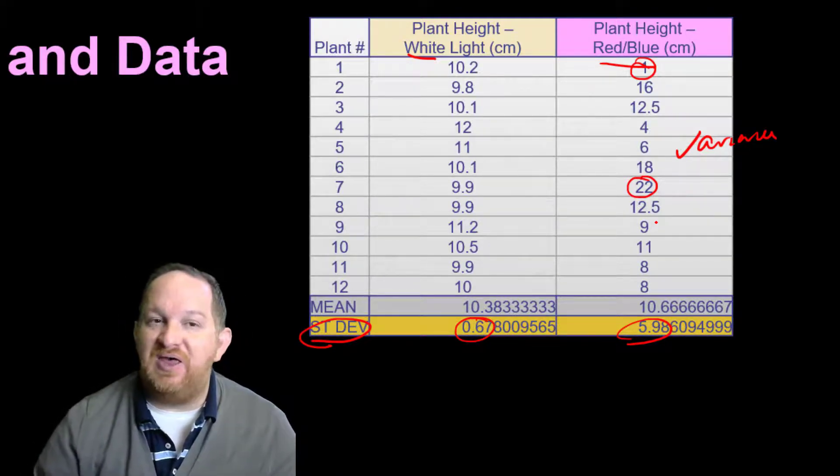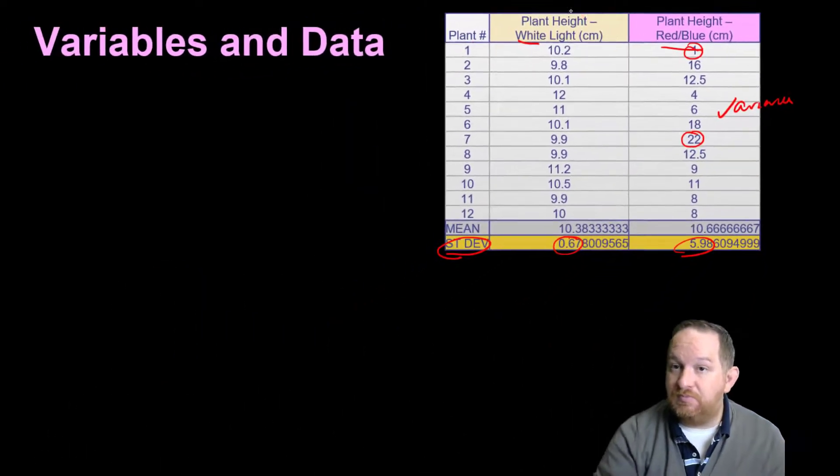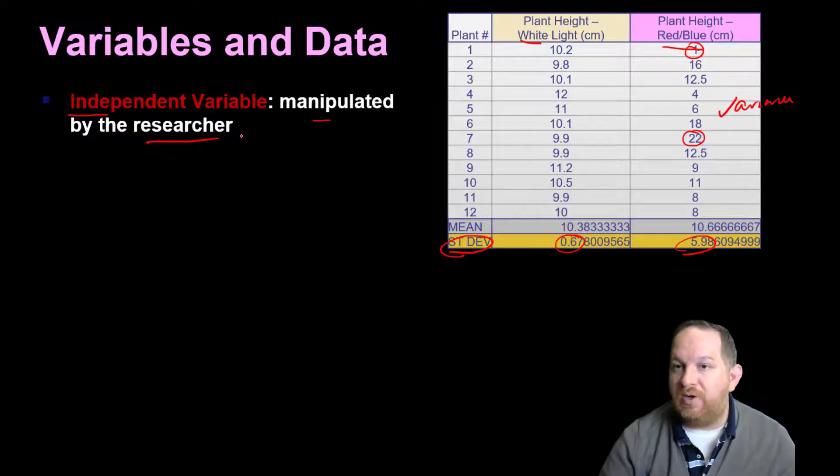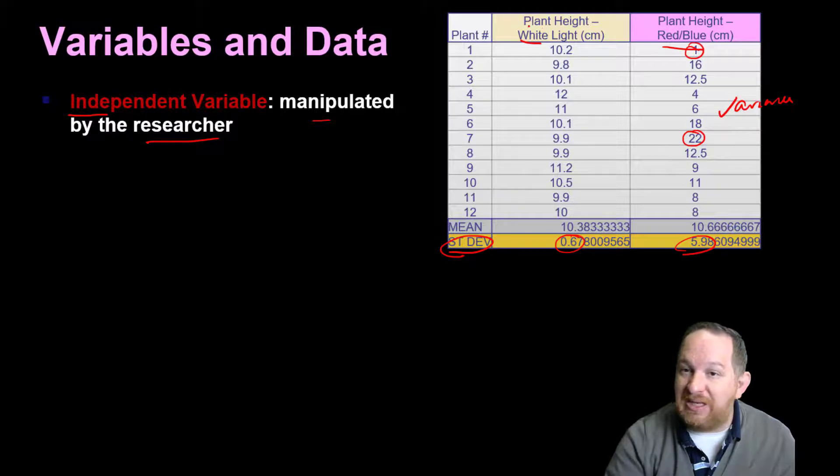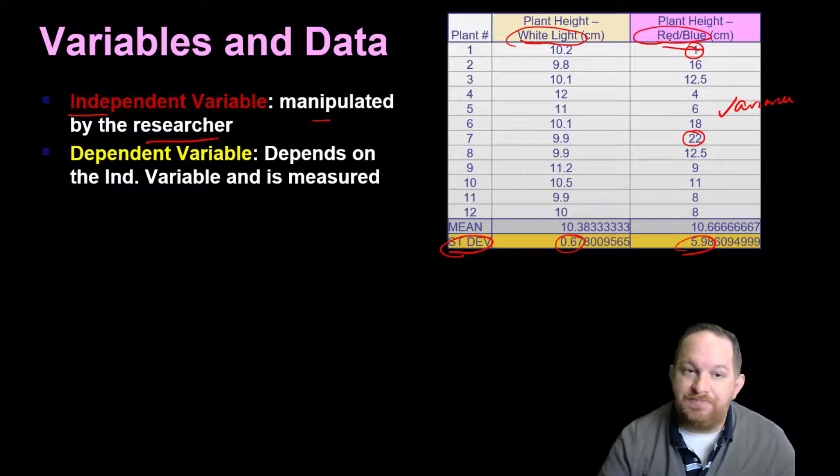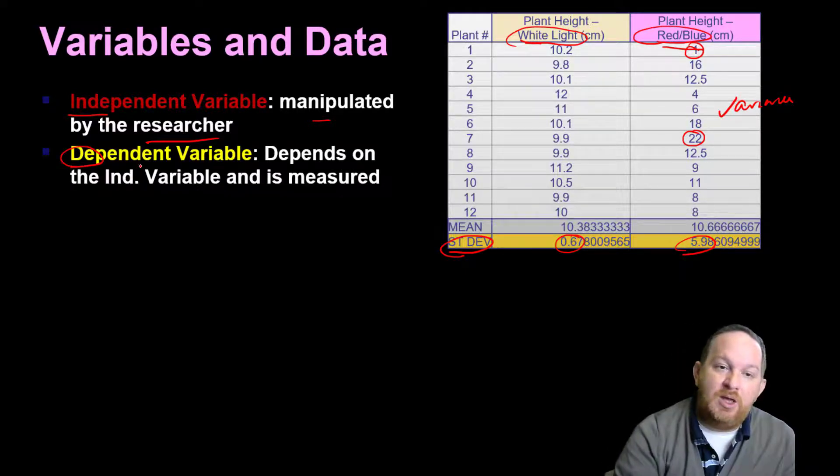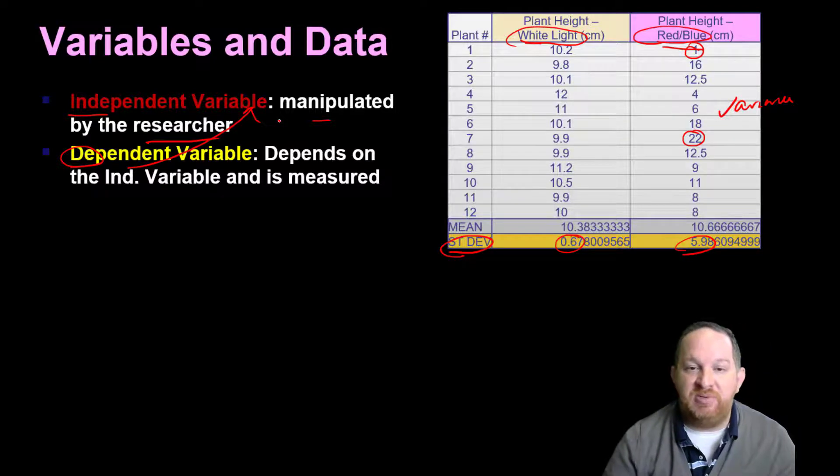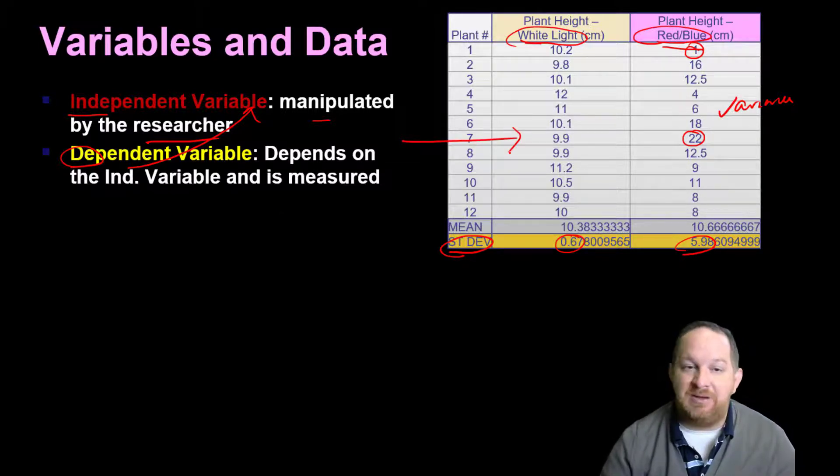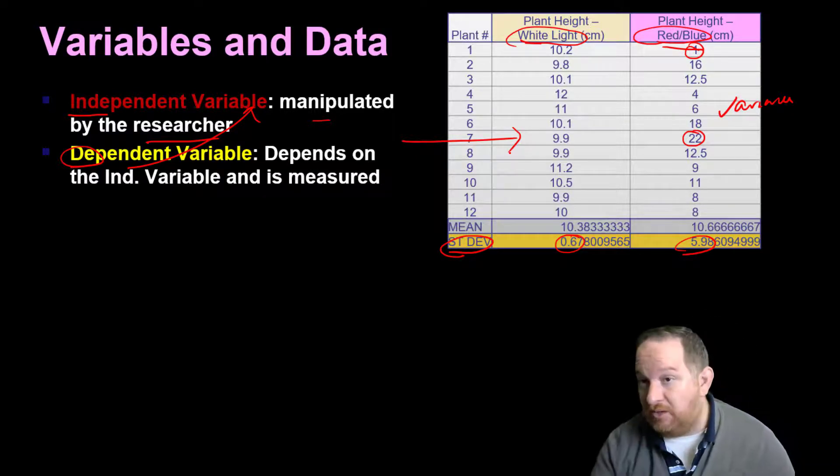What was the thing that I controlled? We would call that the independent variable. That's manipulated by the researcher. Well what did I control? I changed and manipulated the color. White light versus red blue light. So my independent variable in this case would be the light color. Now then the dependent variable depends on that. Depends on the independent variable and we measure it. So in this case, my dependent variable, of course, is going to be the stem height in centimeters because the height depended on the light color.